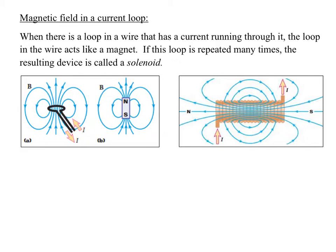Now, what if this wire had a turn in it? If I follow along with my thumb in the direction of the current, my fingers show the direction of the magnetic field. As I make a turn around the wire, my fingers aren't really changing — the magnetic field is still coming out from the loop in the wire. Although the current is changing direction, the magnetic field produced still comes out of the center of the wire.